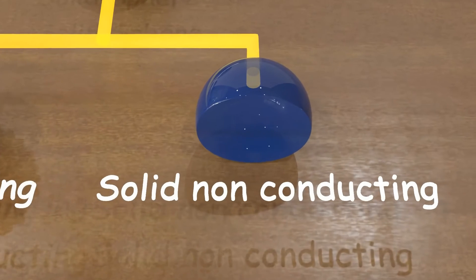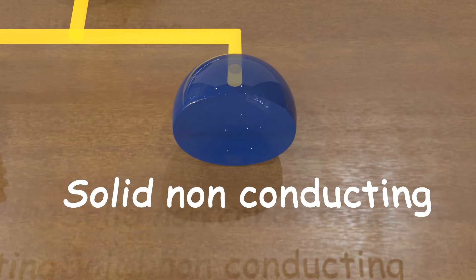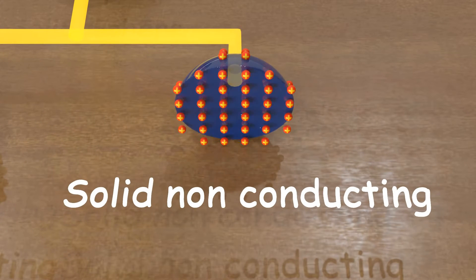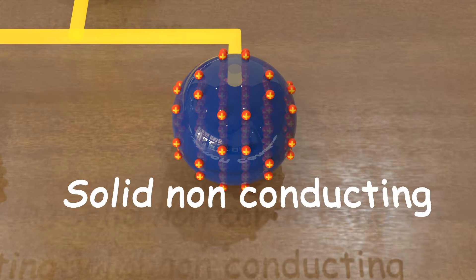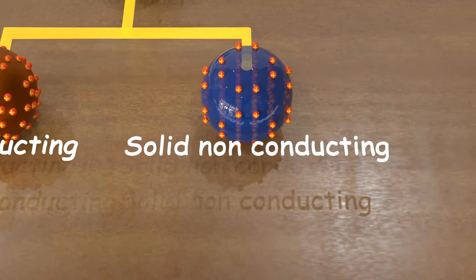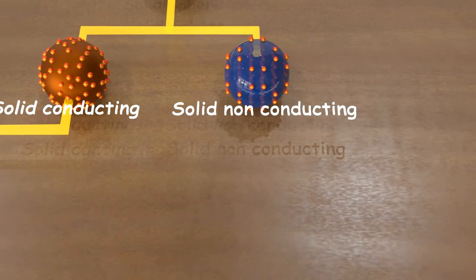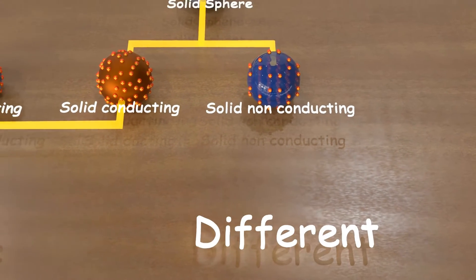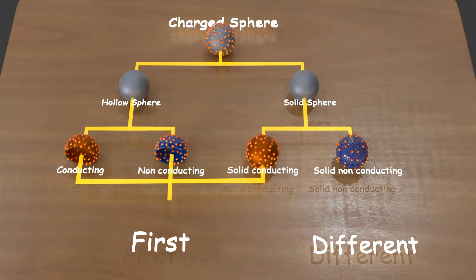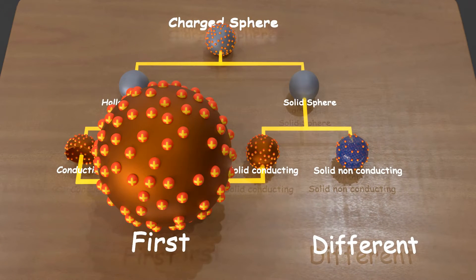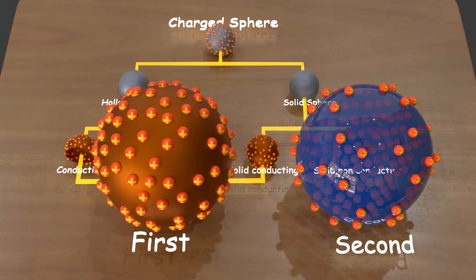However, in the case of a solid non-conducting sphere, charges do not accumulate on the surface but are distributed throughout the volume. In this scenario, the derivation and formula will be entirely different. Therefore, we have two cases for derivation: first, when charges are on the surface of the sphere, and second, the unique case when charges are uniformly distributed in the volume.